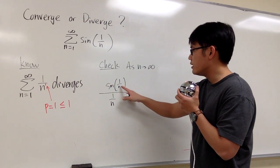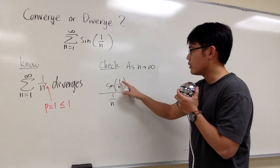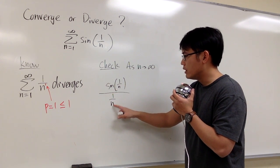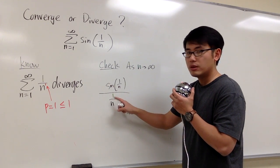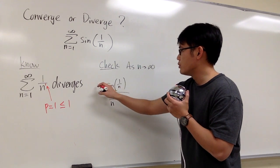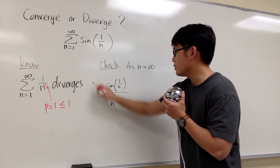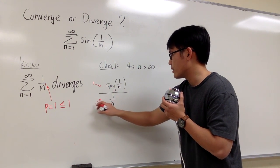But then, as n goes to infinity, 1 over infinity will be 0, sine of 0 is 0, and on the bottom, we have 1 over infinity, which is 0 right here as well. This is going to give us a 0 over 0 situation, so let me just put it down right here, this will be 0, this will be 0.